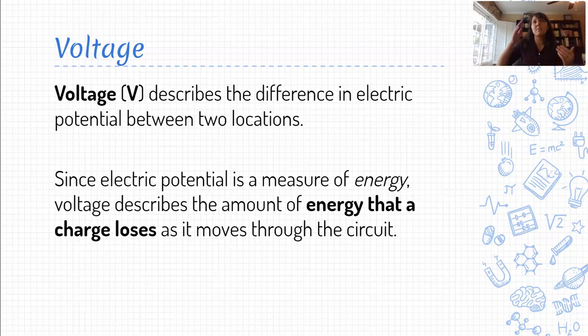So electric potential, then, is a measure of energy. Voltage is giving us a measure of how much electric potential is changing. So if we put those two ideas together, what voltage is really telling us is something about how much energy our electrons are losing as they move throughout the circuit. So when we talk about voltage drops across a resistor, it's really allowing us to start to try to quantify how much energy our charge is losing during the process of moving through that resistor.